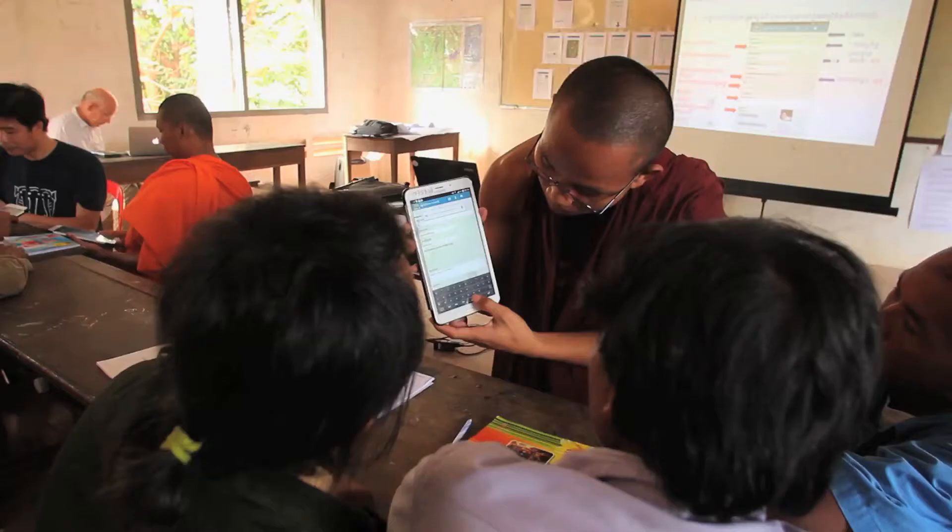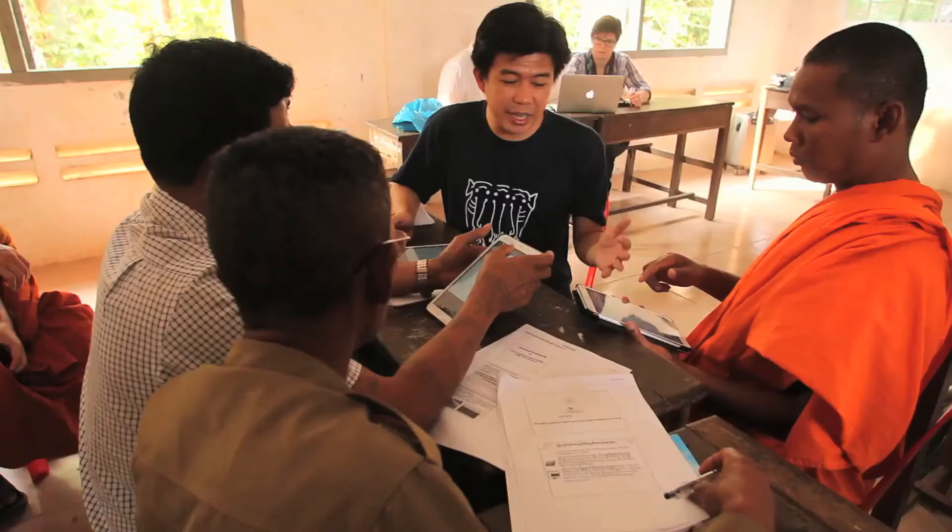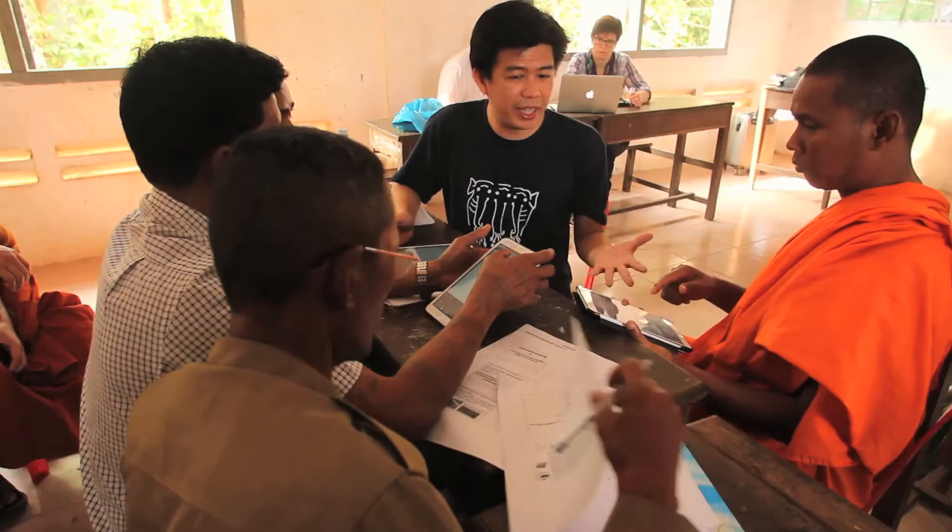Next, the trainees are instructed on how to use the OpenTenure tool and to consider how OpenTenure could be used most effectively in their own community. Before going to the field, participants learn how to create a claim and to input critical data such as names, dates and photos to back up land tenure claims. They can also attach and store important documents such as land title agreements between households and local authorities.